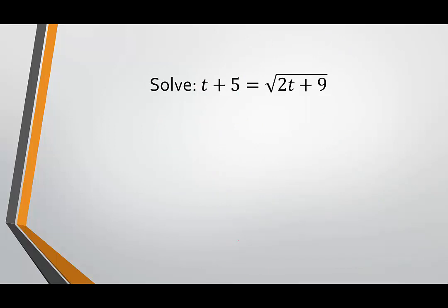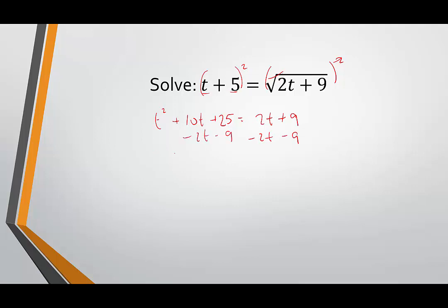In the next example, the radical is by itself, so we can square both sides. We get (t plus 5) quantity squared on the left: first term squared plus the two terms doubled gives 10t, plus 25. On the right, the radical and the exponent cancel, leaving us with 2t plus 9. We again have a quadratic — t squared is not going to cancel — so I'm going to move everything to the left-hand side and subtract 2t and subtract 9.